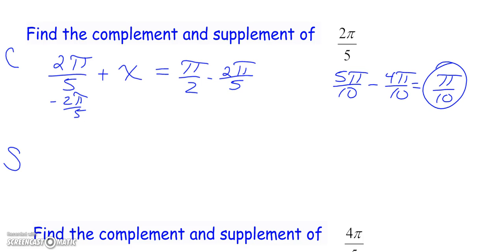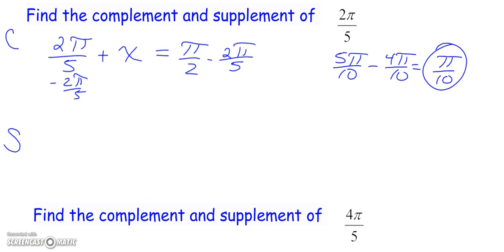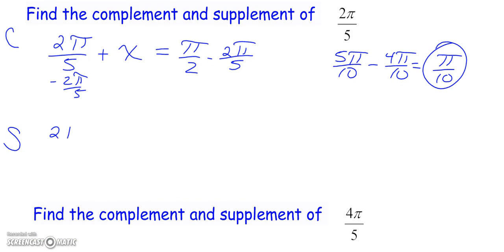If I had to find the supplement, it would work exactly the same way, except this time it's 2π over 5 plus x. This time I need to total up to π. This one's a little easier to do in our heads. I think you probably can figure out that x equals 3π over 5 using reasoning from the previous problem. So it's only a slightly different subtraction.